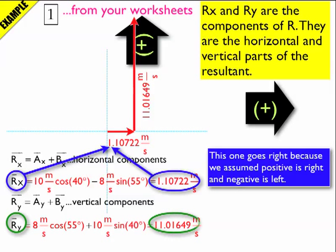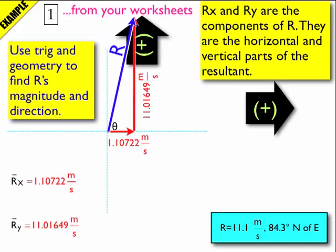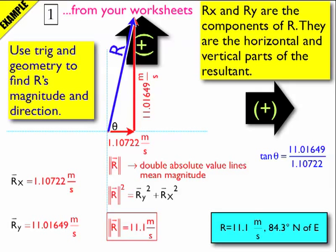You can see where they all come from: ry and rx. Now I'll construct my final vector r. I can find the magnitude of r using the Pythagorean theorem, and I can find the direction using trig — the opposite over adjacent equals tangent of theta. I get 83.4 degrees, and it's pointing north of due east. So the magnitude is 11.1 meters per second, and the angle is 84.3 degrees north of due east. That's how you find the resultant vector using components and trig.